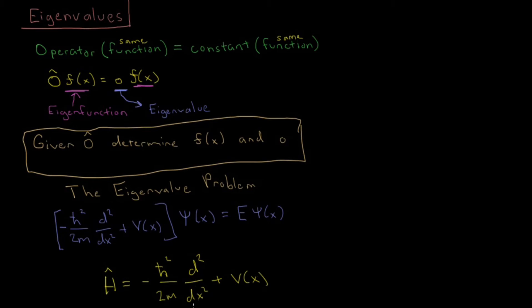because we have this minus h-bar squared over 2m, second derivative with respect to x, plus potential energy. Given a specific potential energy, you will have a specific Hamiltonian operator.